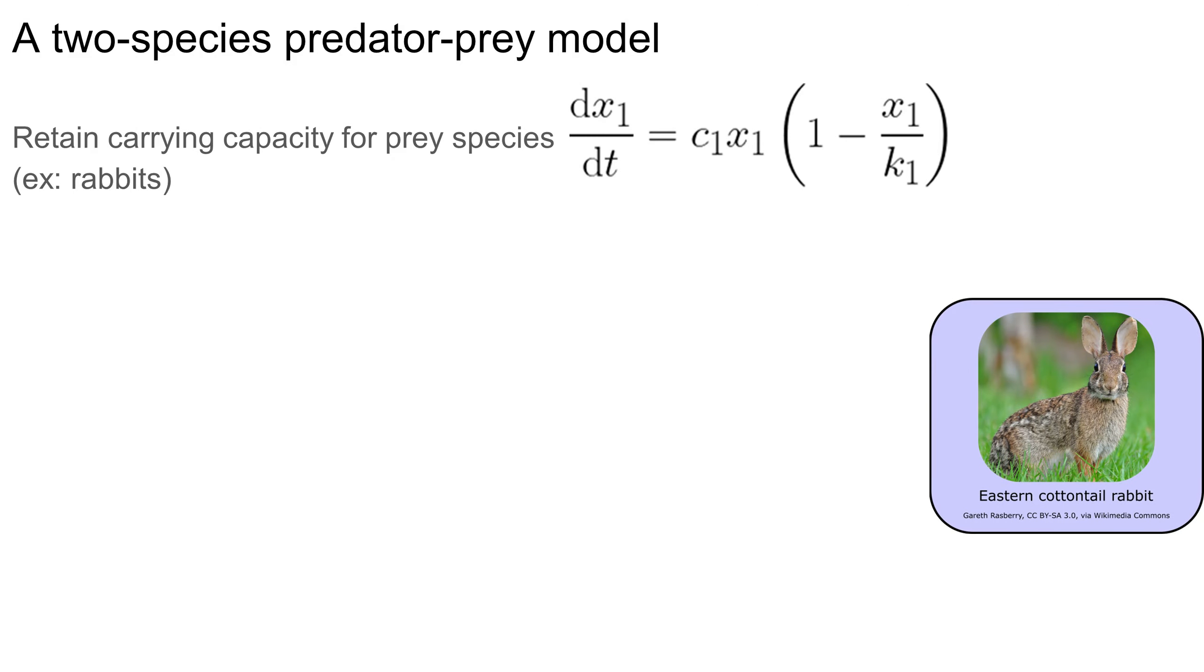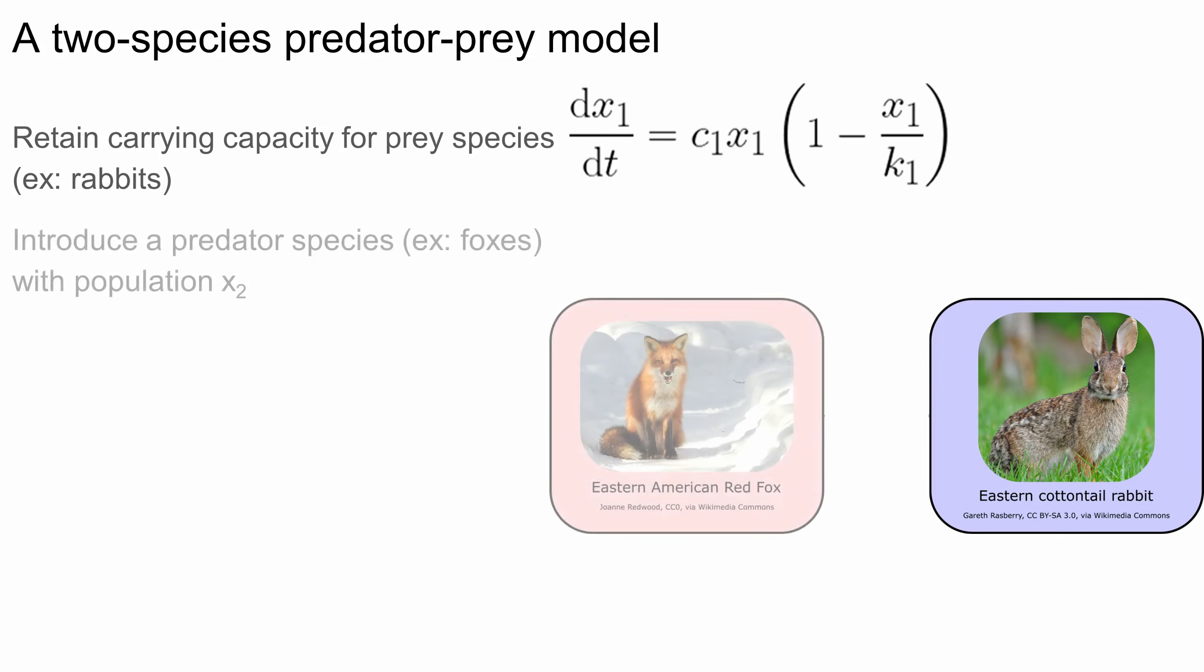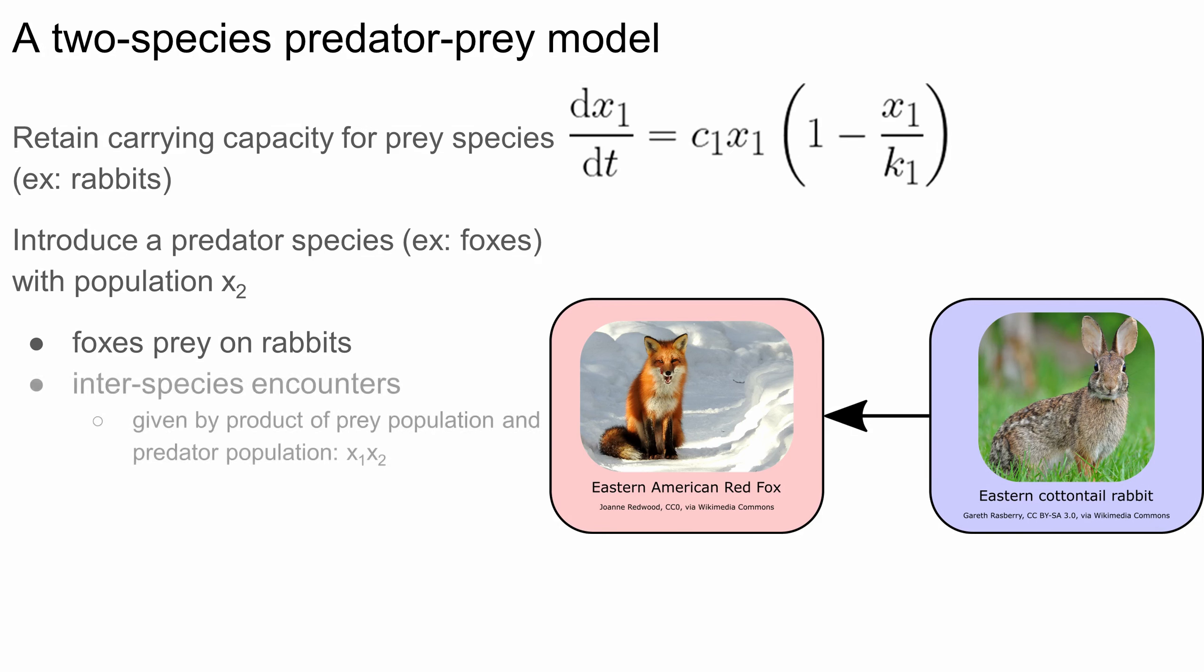Let's increase the complexity of our model just a little bit by adding a second species. We'll keep the logistic growth model for our rabbit population, denoted now by x1, but we'll add a predator species, let's say foxes, with its own population denoted by x2. Foxes prey on rabbits, so the two populations will be coupled. The number of interspecies encounters depends on both population sizes, and we can represent this by the product of the two population sizes, x1 times x2. These interspecies interactions will hurt the rabbit population growth rate by some amount, and they'll help the fox population growth rate by some other amount.